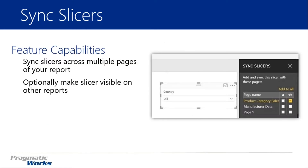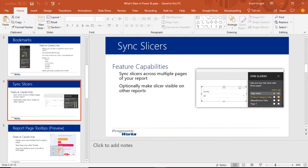The next feature is Sync Slicers — the ability to create a slicer on one page and have it interact with other report pages. This is a new feature just released last month. Many of you are probably familiar with slicers from Excel; the same idea works in Power BI. You can choose which report pages interact with the slicer — maybe you have 10 report pages but only want 3 of them to sync. They've given you flexibility with how this works.